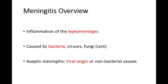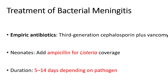Treatment of bacterial meningitis must be initiated promptly to improve outcomes. Empiric antibiotic therapy is usually started immediately, even before the results of diagnostic tests are available. This typically includes a combination of a third-generation cephalosporin, such as ceftriaxone or cefotaxime, with vancomycin to cover drug-resistant Streptococcus pneumoniae. For neonates, ampicillin is added to the treatment regimen to provide coverage for Listeria monocytogenes. The specific antibiotic treatment can be tailored once the causative organism is identified, with duration usually lasting between 5 to 14 days.